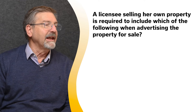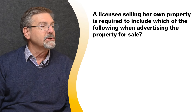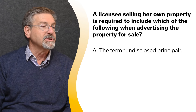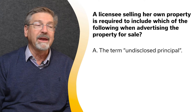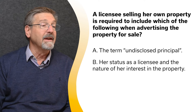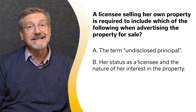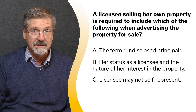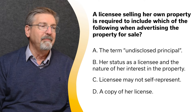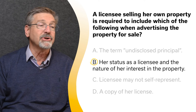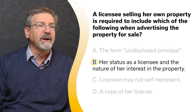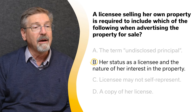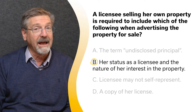A licensee selling her own property is required to include which of the following when advertising the property for sale? A. The term 'undisclosed principal.' B. Her status as a licensee and the nature of her interest in the property. C. Licensee may not self-represent. Or D. A copy of her license. The correct answer is B. When selling a property he or she personally owns or has an interest in, a licensee must disclose that fact in all advertising.